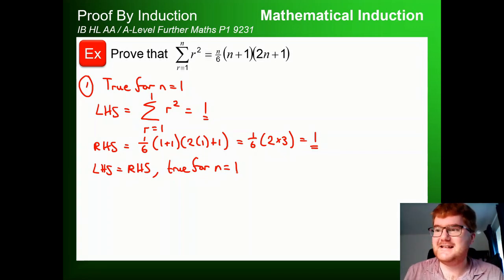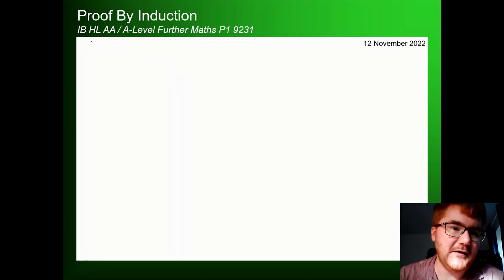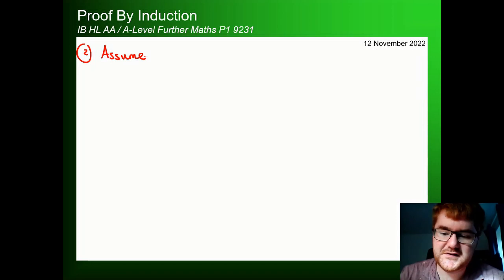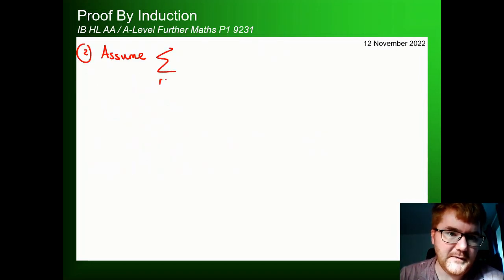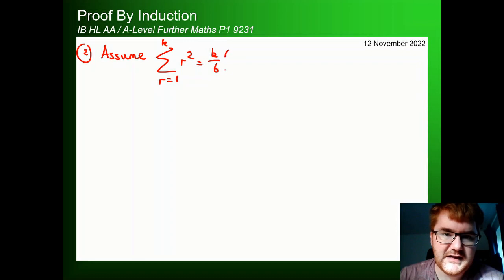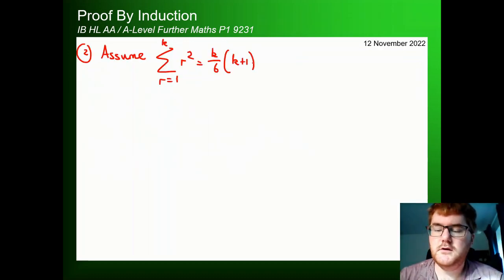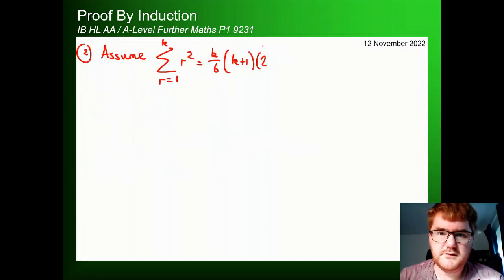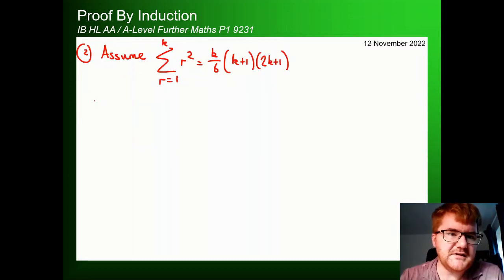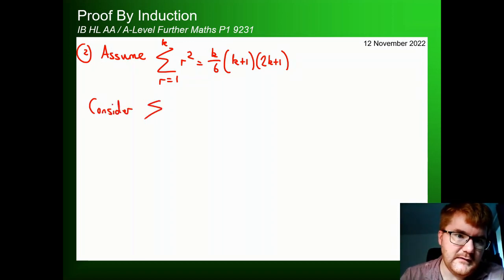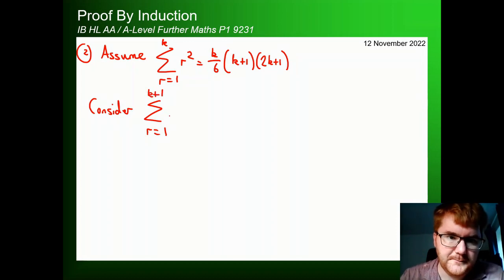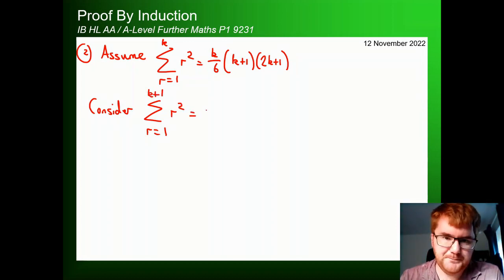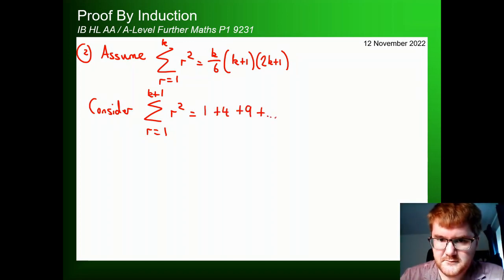Now for the assumption step. We assume the sum from r=1 to k of r² equals ⅙k(k+1)(2k+1). Then we consider the k+1 version, which is the sum from r=1 to k+1 of r². Writing out the series: 1+4+9+…+k²+(k+1)². The target expression — replacing k with k+1 — is ⅙(k+1)(k+2)(2k+3).